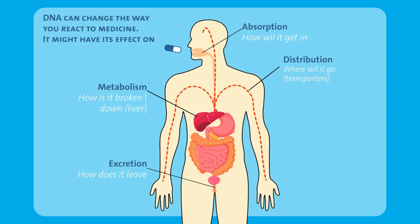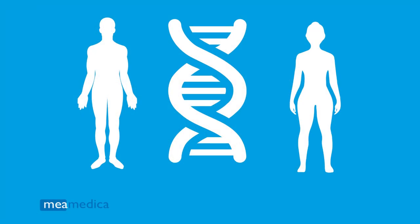The proteins in our body that are formed from our DNA are responsible for the absorption, distribution, metabolism, and excretion of drugs. As we all have our own set of genes, we are all genetically different, and therefore, our bodies also differ in how we react to medicines.